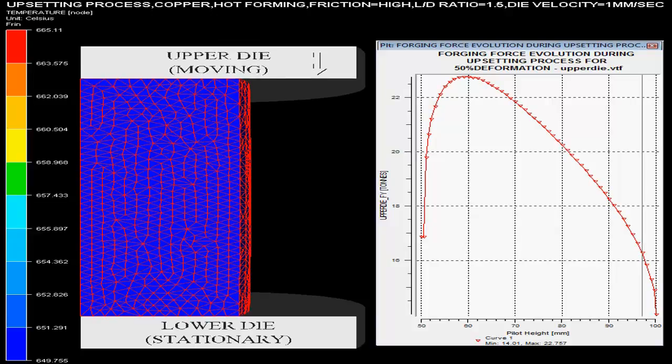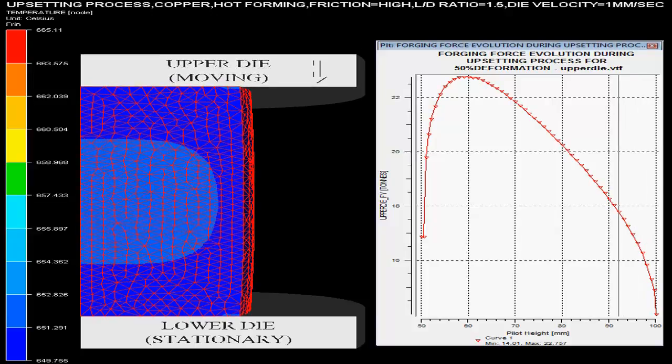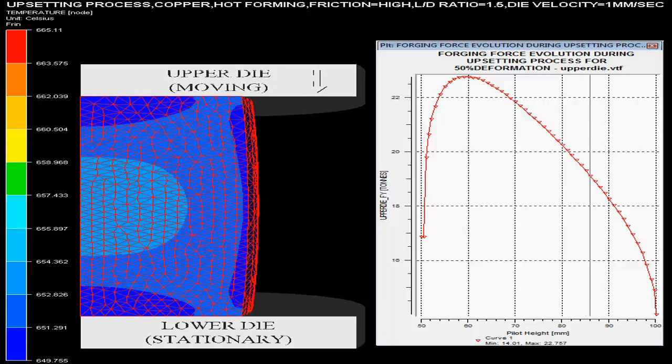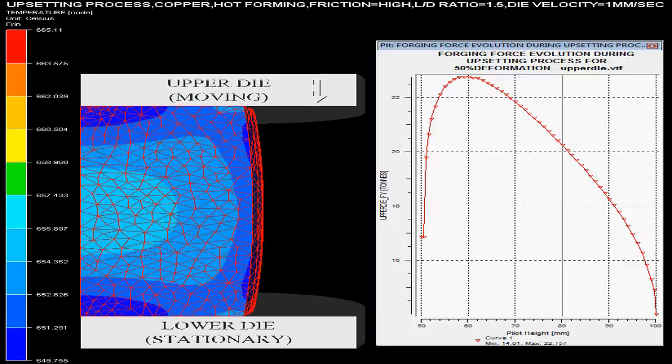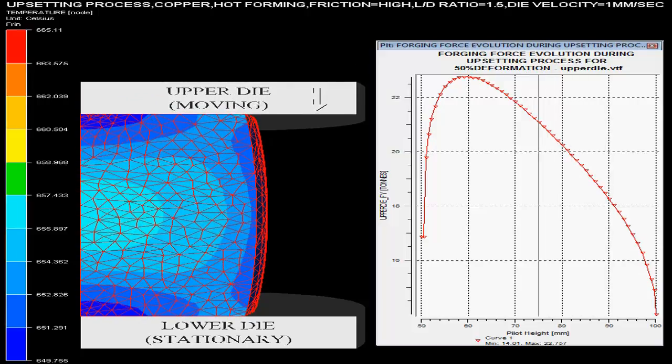The video shows the upsetting operation taking place using a mechanical press. The initial copper billet having an L by D ratio equal to 1.5 is taken hot.